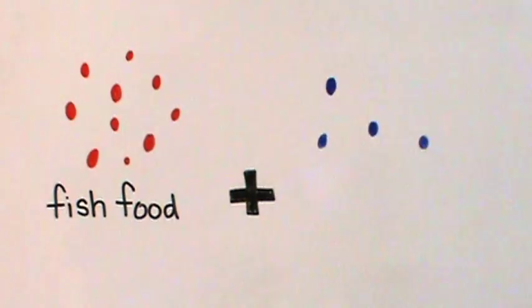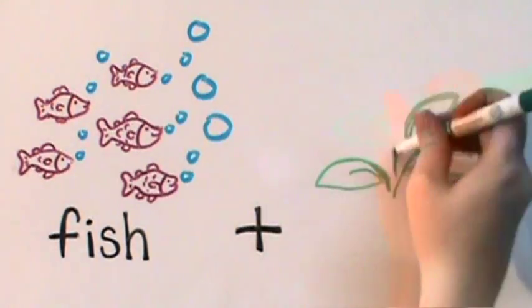So let's review. We put into our system fish food and spent grain. Out of it, we get fish and plants for eating.